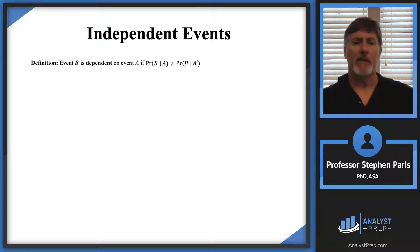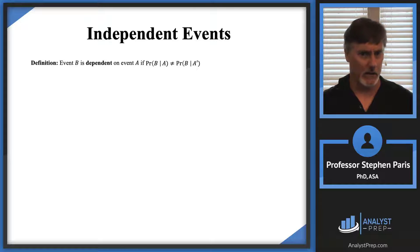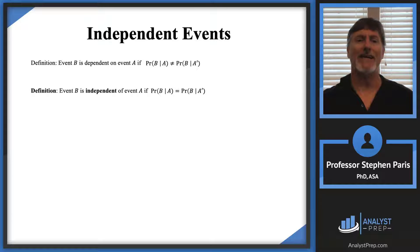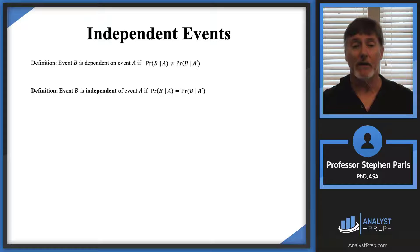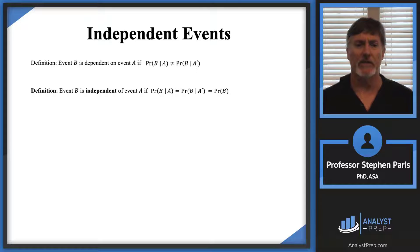Generally, event B is dependent on event A if the probability of B given A is not equal to the probability of B given the complement of A, just like we just saw. On the other hand, event B is independent of event A if those probabilities would have been equal to each other — the events would have been independent. And although it may not be clear, it is true that those equal probabilities would just be the probability of event B. You don't have to worry about whether event A occurs or not — it's just the probability of event B, because event B is independent of event A.